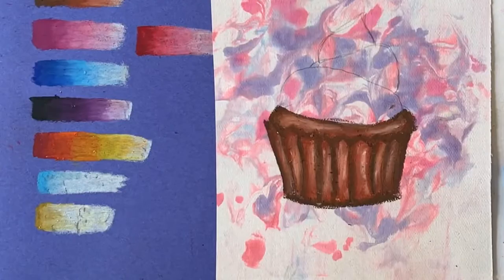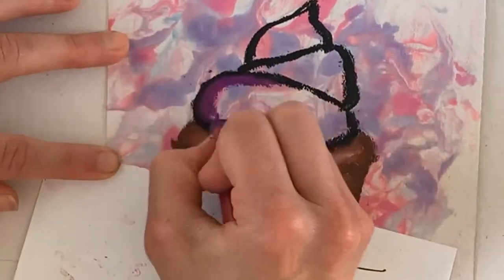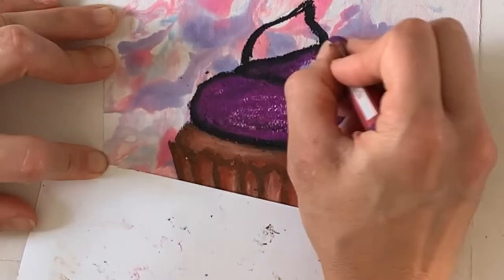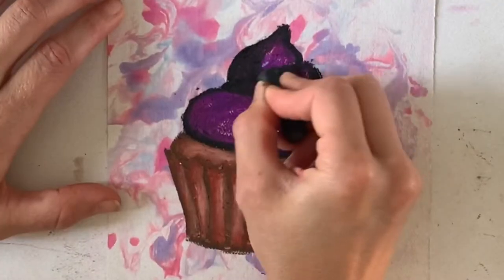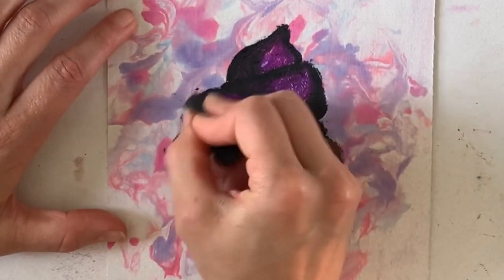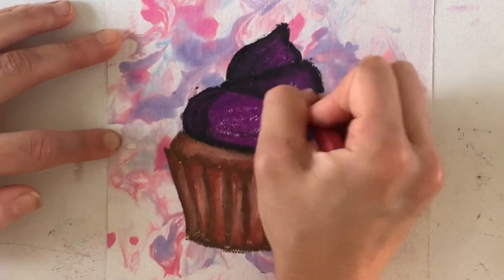For my icing, I'm doing the galaxy effect: black, purple, and white. Blending is key, so if it looks too outlining, always go back and forth with your dark and light colors until you have a wonderful blend.